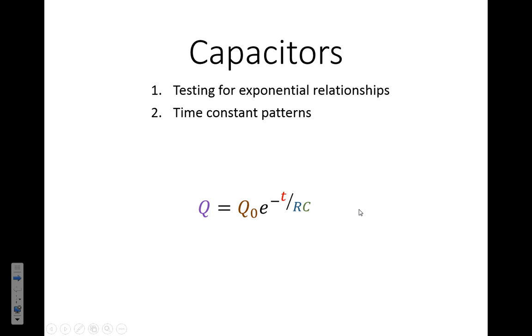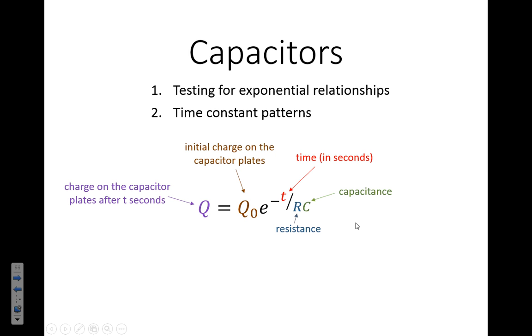Let's define the terms first. Q is the charge that we've got after T seconds. Q naught is what we've got on the plates to start with. T is the time in seconds. We've got a resistance and we've got capacitance. RC, which is the product of resistance and capacitance, is known as the time constant for the circuit.